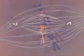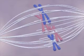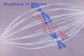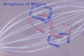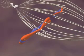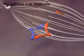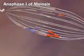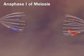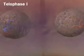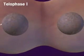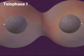Now comes the second key difference between mitosis and meiosis I. In anaphase of mitosis, the chromatids separate. In anaphase I of meiosis, the homologous chromosomes separate. The chromosomes moving to the poles in anaphase I consist of two chromatids each. This step reduces the chromosome number from diploid to haploid.